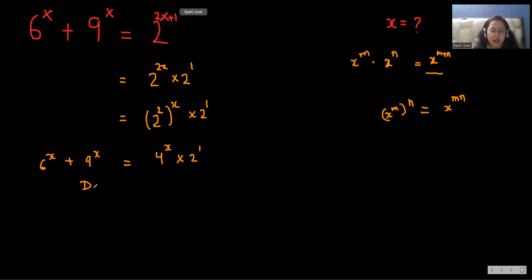If I divide the whole equation by 4^x, I can eliminate this. And what is left? (6/4)^x plus (9/4)^x.